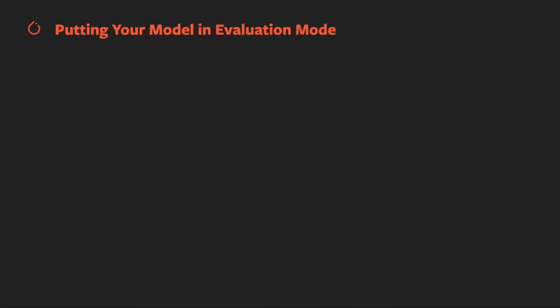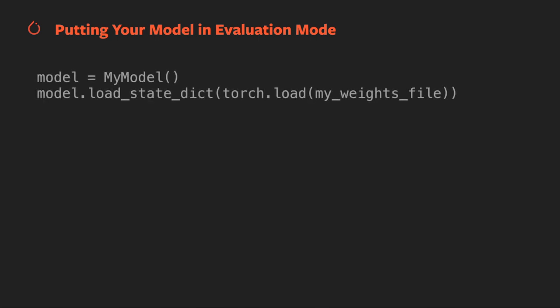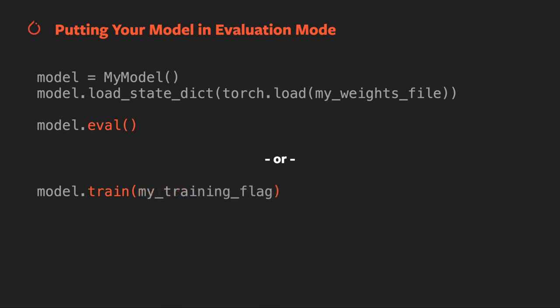Let's look at the procedure for putting your model in evaluation mode. First, you'll want to load your model. For a Python-based model, that will involve loading the model's state dictionary from disk and initializing your object with it. Then you call the eval method on your model, and you're done — your model has now turned off training-related behaviors for inference. It's worth noting that the eval method is actually just an alias for calling the train method with an argument of false.